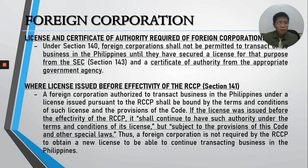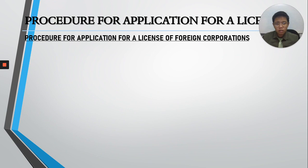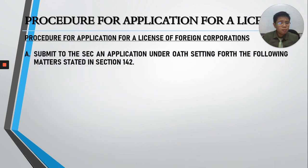A new license is not required since the authority continues, but it is subject to the provisions of the revised code and other special laws. The procedure for application for a license: first, submit to the SEC an application setting forth the matters under Section 142. The matters enumerated by law need not be included in the application if they are already stated in the articles of incorporation.